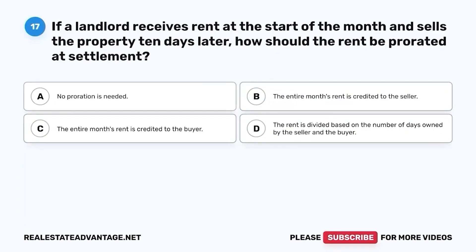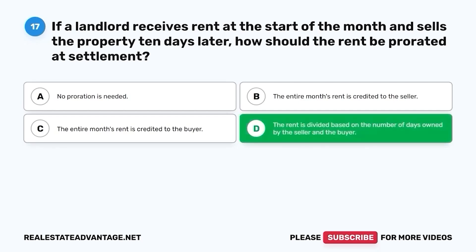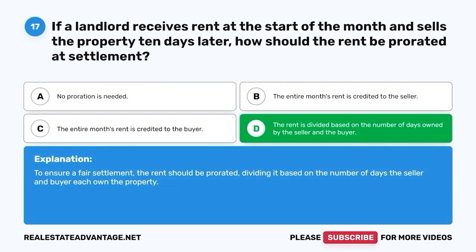Question 17. If a landlord receives rent at the start of the month and sells the property 10 days later, how should the rent be prorated at settlement? A. No proration is needed. B. The entire month's rent is credited to the seller. C. The entire month's rent is credited to the buyer. D. The rent is divided based on the number of days owned by the seller and the buyer. The correct answer is D. To ensure a fair settlement, the rent should be prorated, dividing it based on the number of days the seller and buyer each own the property.